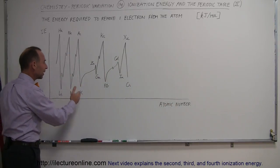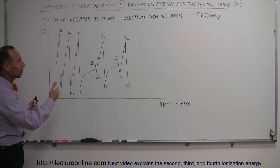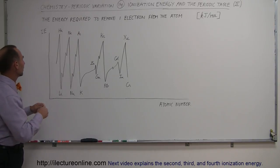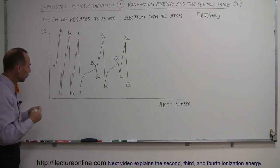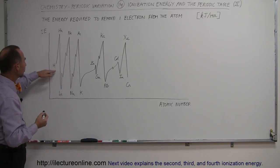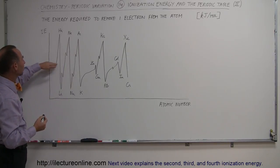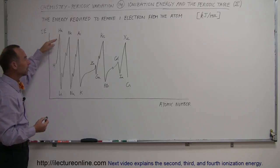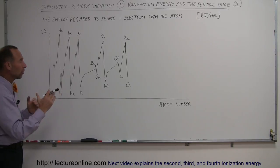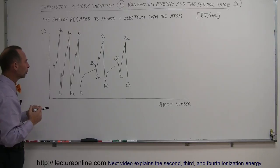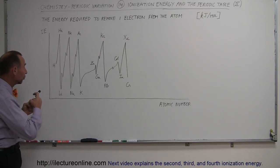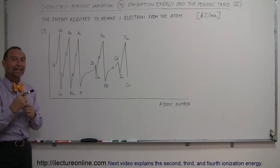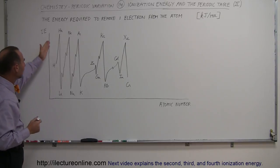As we go from left to right, we're basically going down the elements on the periodic table — one, two, three, and so forth — starting with hydrogen being number one and going to helium. Notice the ionization energy drastically increases going from hydrogen to helium because the atom is smaller, the electrons are closer to the nucleus, and you now have two positive charges instead of one, so it takes a lot more energy to remove one of those electrons.